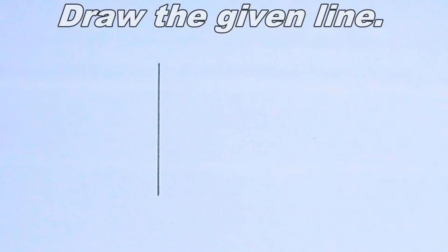To divide a line in a given ratio, the first step you are expected to take is to draw the given line. I have already done this step. I drew a vertical line of length 50mm. The next thing I will do is to label the line AB.